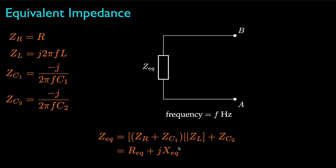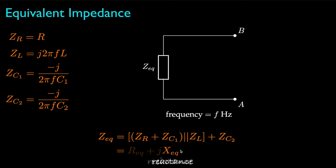The result will be a complex-valued quantity with a real part and an imaginary part. We call the real part the resistance, and we call the imaginary part the reactance.